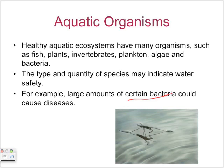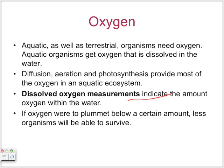Aquatic as well as terrestrial organisms need oxygen. Aquatic organisms get their oxygen from the water, and aquatic ecosystems get their oxygen from diffusion, aeration, and photosynthesis. Diffusion is just oxygen entering the water, aeration is the movement of water and it traps the oxygen in, and photosynthesis comes from aquatic plants.